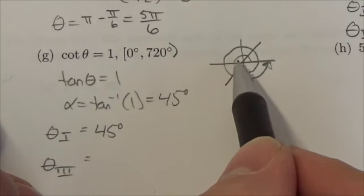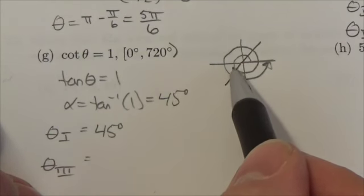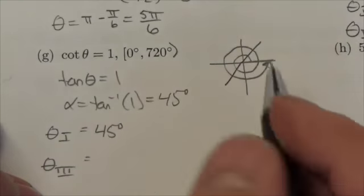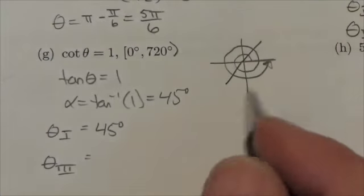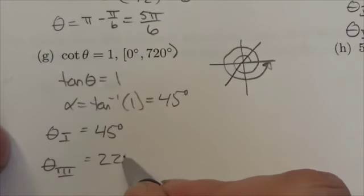Now I keep going, and I get to 180, and then I go down an additional 45 degrees. So 180 plus 45 is going to be 225 degrees.